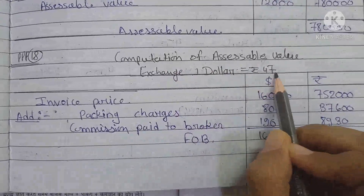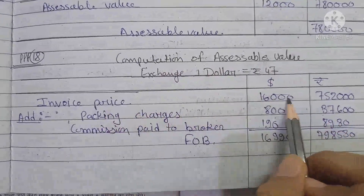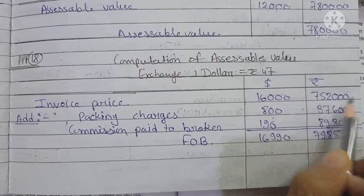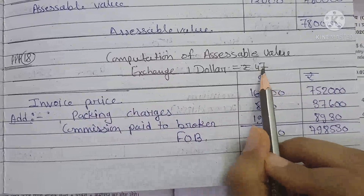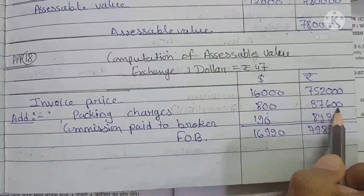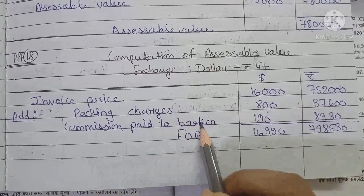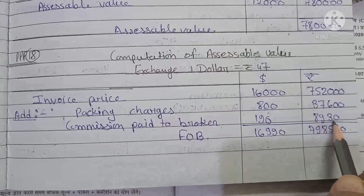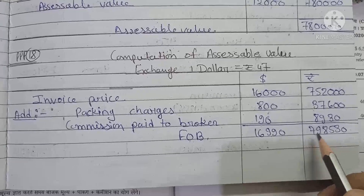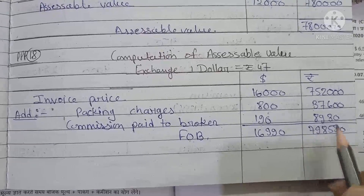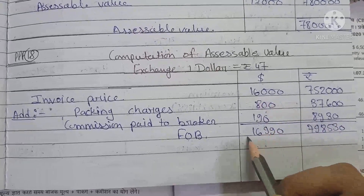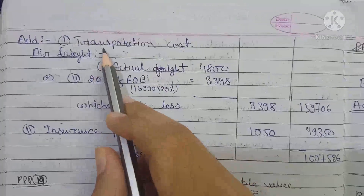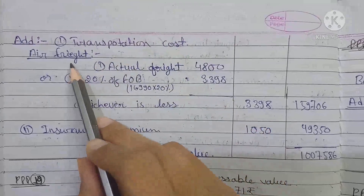Computation of assessable value: Exchange rate is ₹47. Invoice price is $16,000 multiplied by 47 gives ₹7,52,000. Packaging charges are $800, giving ₹37,600. Commission paid to broker is $190, giving ₹8,930. Adding these gives FOB value of ₹7,98,530.